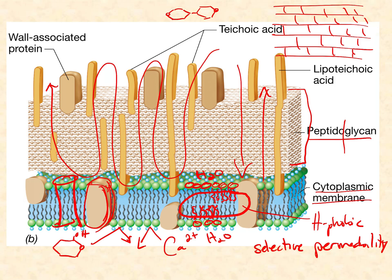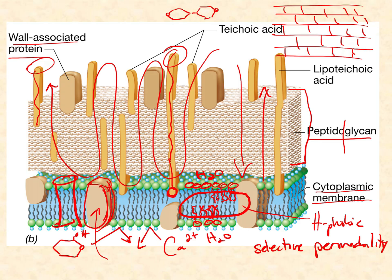There are a couple of other molecules embedded in the peptidoglycan that are unique to gram-positives. The first set we generically call wall-associated proteins — don't mix those up with the integral membrane proteins. These wall-associated proteins have a variety of functions, some known and some still a mystery, but they are unique to the cell wall of gram-positives. Then we have teichoic and lipoteichoic acids. These teichoic acids are long polysaccharides with a bunch of negative charges, so they're highly hydrophilic. A teichoic acid goes from the outside environment and penetrates partway into the peptidoglycan. A lipoteichoic acid has an exposed section on the outside, a section that spans the peptidoglycan, and then a lipid region that locks it into the hydrophobic interior of the cytoplasmic membrane.